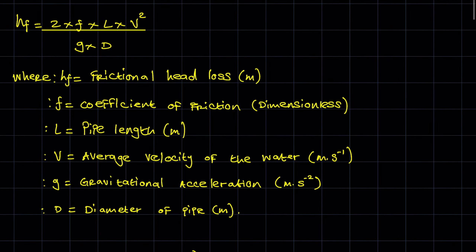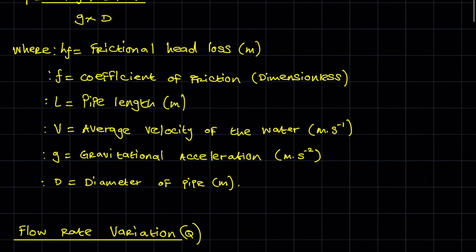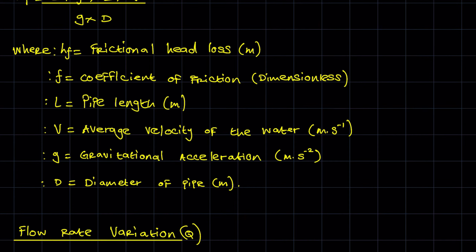hf (or h sub f) is the frictional head loss in the pipe — the frictional head loss of the water from one section to the second section. f is the coefficient of friction, which is dimensionless. L is the pipe length in meters. v is the average velocity of the water.